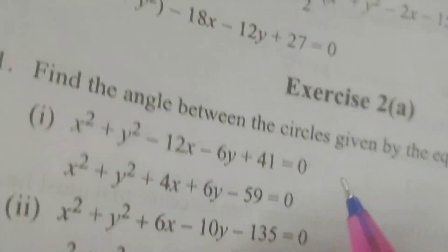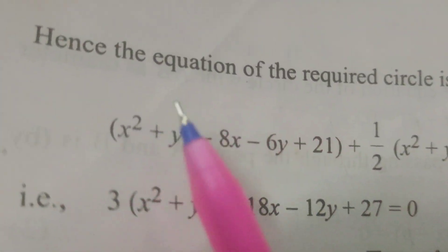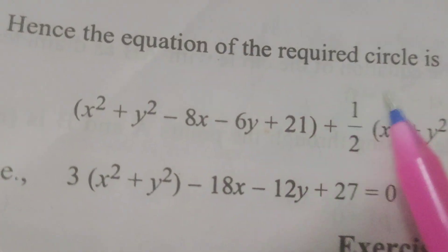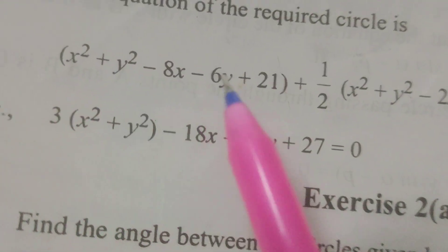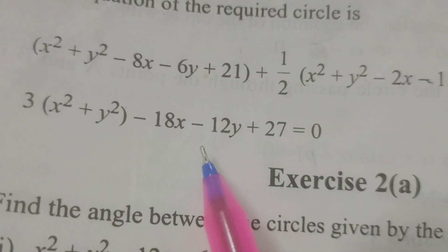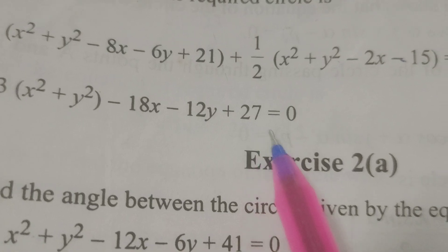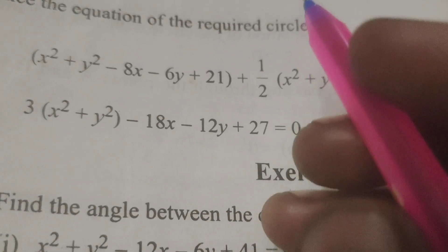Substituting λ = 1/2 into the formula gives the equation of the required circle. Simplifying, we get 3(x² + y²) - 18x - 12y + 27 = 0.